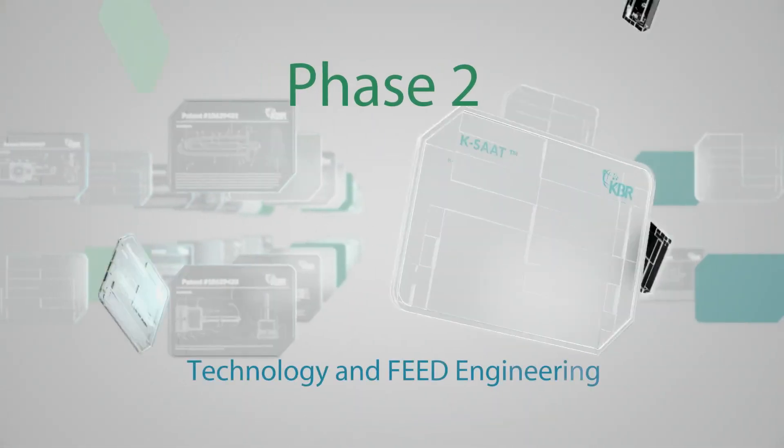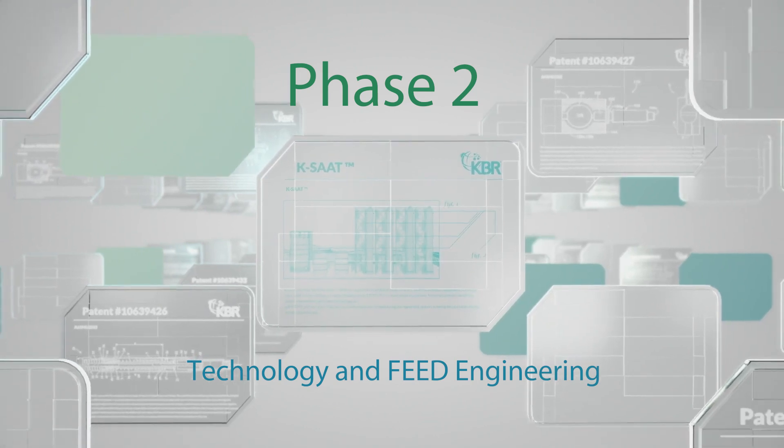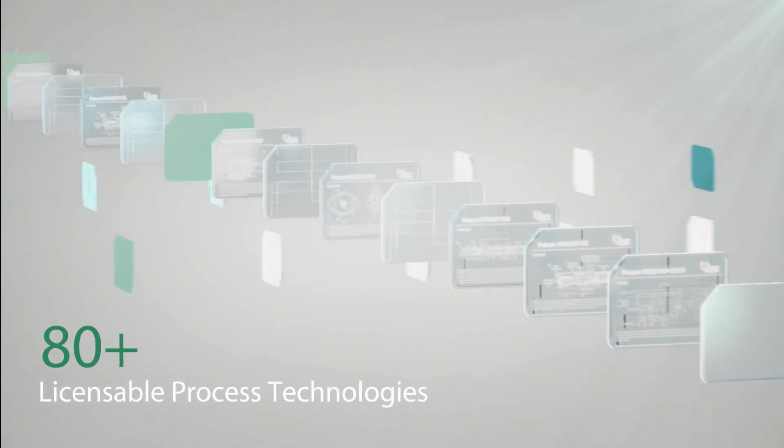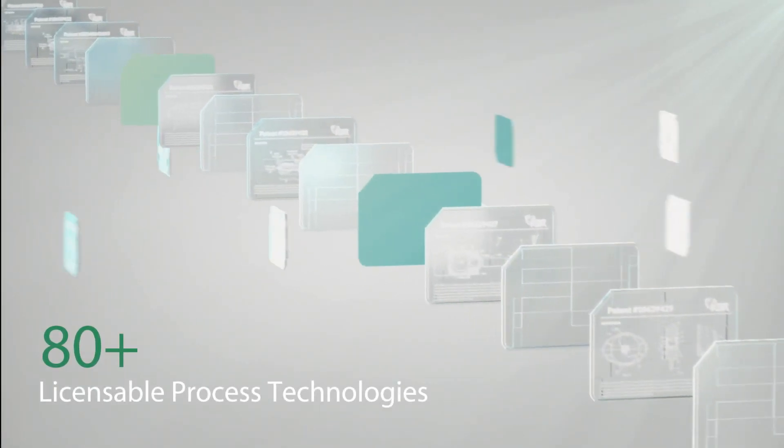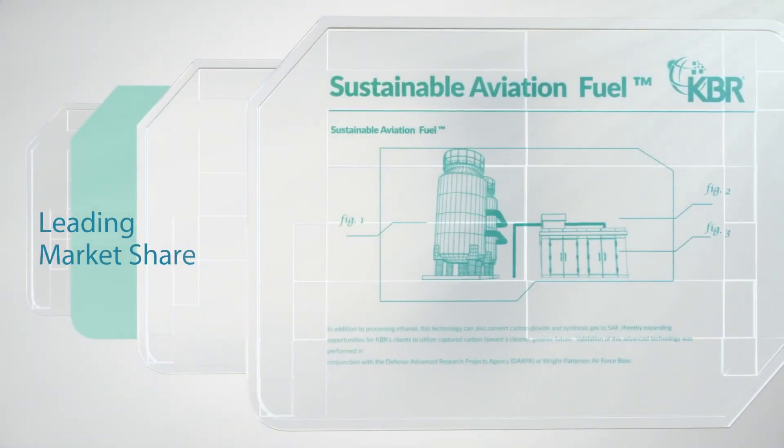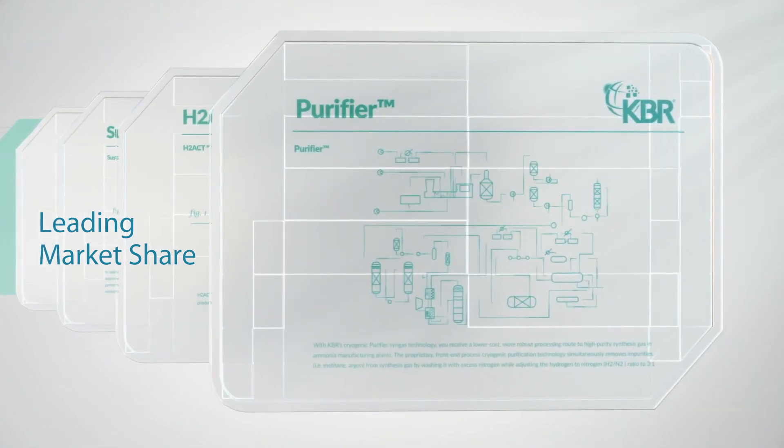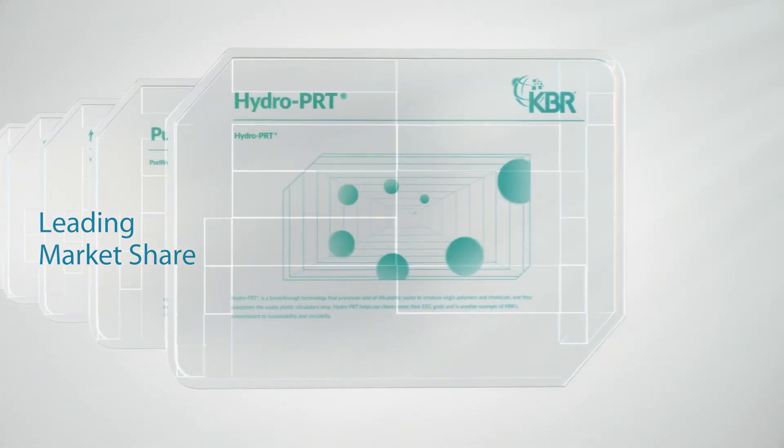When a project is born, clients license the process technology that drives the chemistry which converts raw materials into valuable products, using KBR's sustainable technology IP portfolio spanning sustainable aviation fuel, hydrogen, ammonia, waste plastics recycling, olefins, and much more.